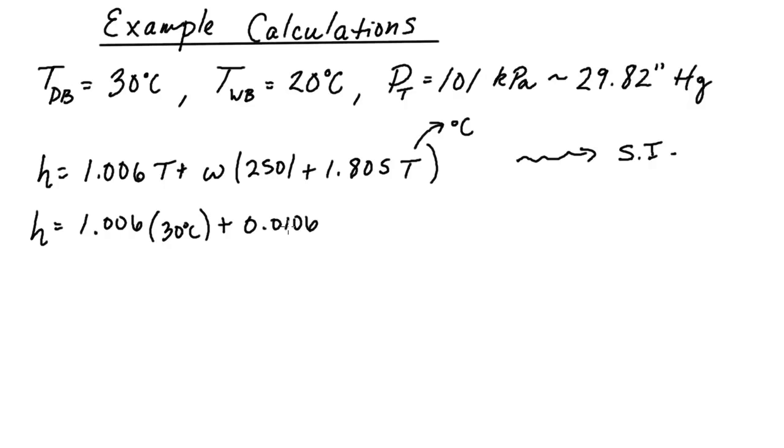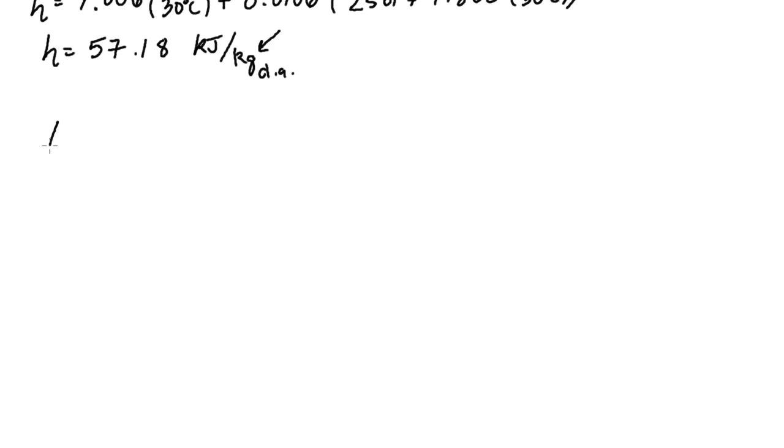And if I remember right, it was 0.0106 for a specific humidity. 2501 plus 1.805, also times 30 degrees C. And if you do that, you will get an enthalpy that is around 57.18 kilojoules per kilogram dry air. Remember, all these things that are normalized versus mass are going to be normalized versus the mass of the dry air. And the reason we do that is because in a typical HVAC process, the amount of dry air from the beginning to end does not change, while a lot of times we will add or take out moisture. We will humidify or dehumidify.